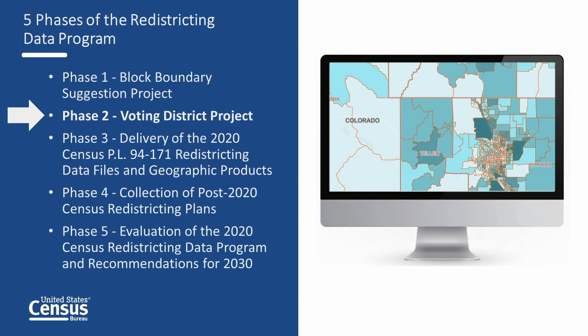Phase two is the voting district project, which provided states the opportunity to submit their voting districts — for example, wards and precincts — for inclusion in the 2020 Census redistricting data tabulations. This ensures states can get the 2020 Census data they need for their voting districts. As was the case in phase one, during phase two, states had the opportunity to submit suggested legal boundary updates, as well as updates to other geographic areas. These actions allowed states to construct some of the small area geography they need for legislative redistricting.